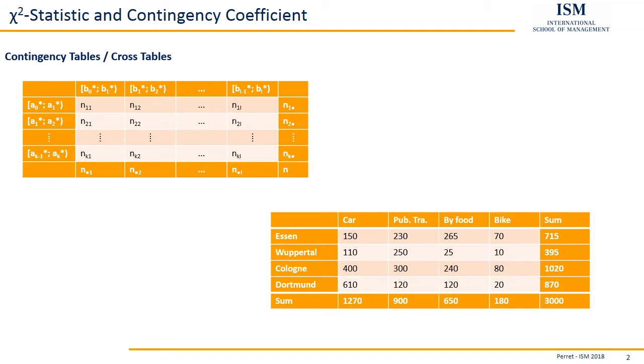And in the lower part, or on the right hand, we have the sum, so the marginal frequencies. And in the absolute lower right, we have the overall number of observations. So here we have 3000 observations.